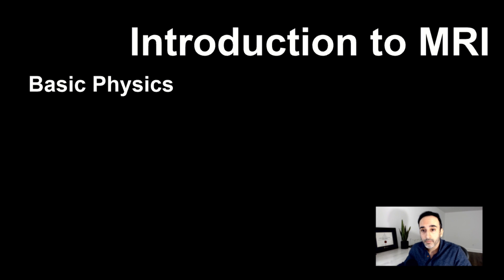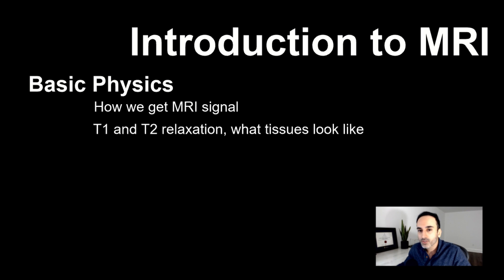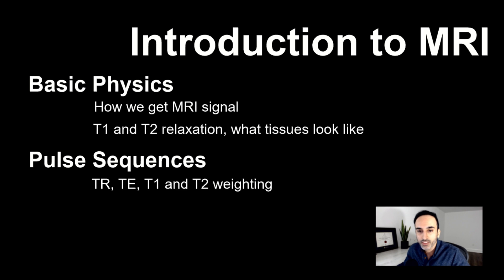We'll split the introductory videos up as follows. We'll start by reviewing some very basic MRI physics. So in this first video, we'll talk about how we get MRI signal. The video after will cover T1 and T2 relaxation and introduce how we differentiate tissues on MRI. Then we'll dive into the pulse sequences themselves, discussing key concepts like T1 and T2 weighting.